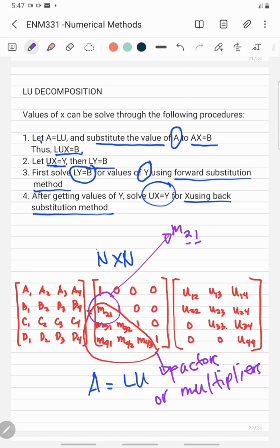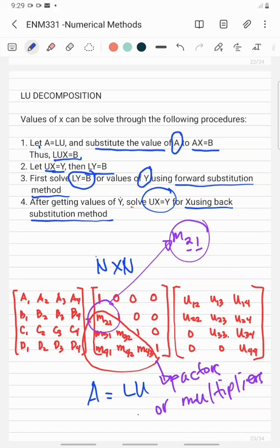Once the multiplier or factor is obtained, you multiply this to the elements of row 1 and subtract the result from the elements of row 2 to eliminate X1. Then, similar procedures to eliminate X2, X3, and X4.